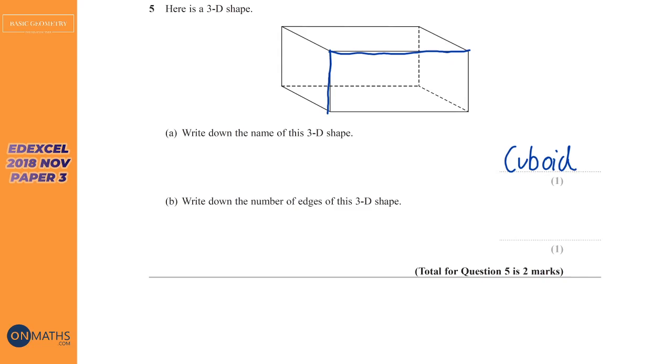Now the next one says write down the number of edges of this 3D shape. Like I said in the last question, an edge is the bit you can run your finger along. Now I've already drawn two edges there, so we've got a third one here and a fourth one here. So there's four on the front.